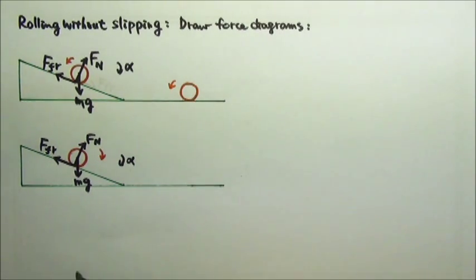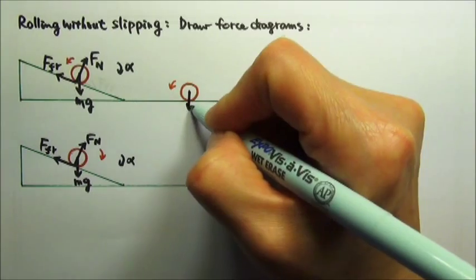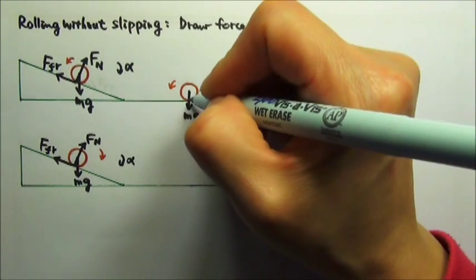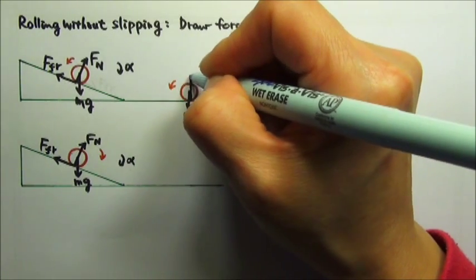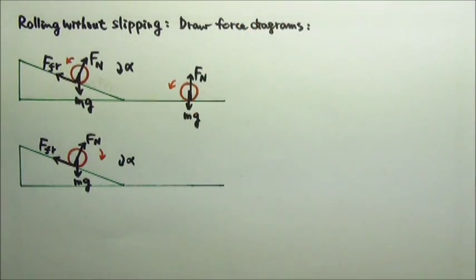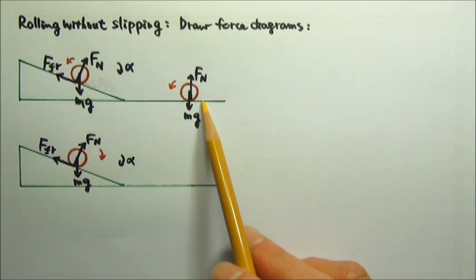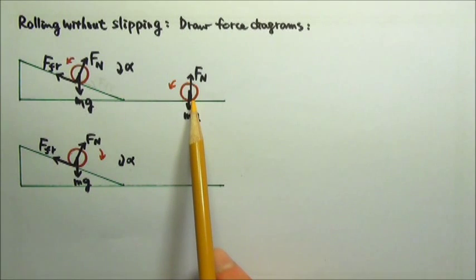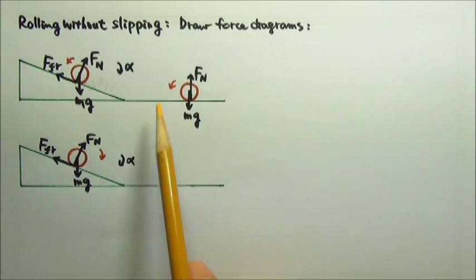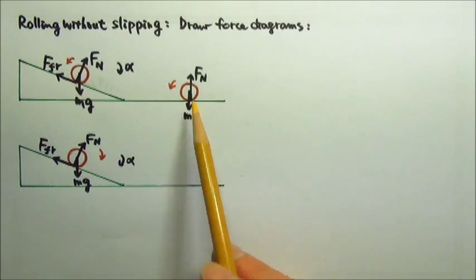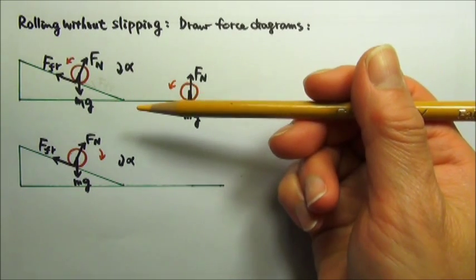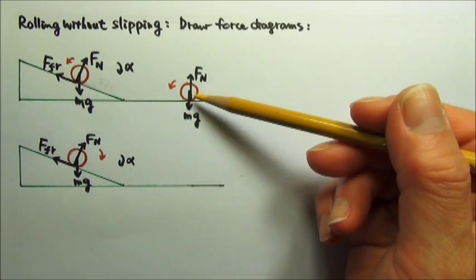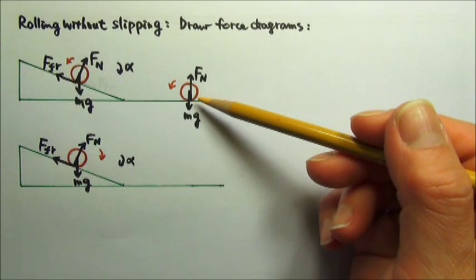Now let's look at the sphere on the horizontal surface. mg goes straight down from the center of mass, and normal force acts at the contact point going straight up. What about friction? The sphere on the horizontal surface has no tendency to slide — there is no force pulling it to the right or to the left. The sphere with the initial velocity would continue to travel at constant velocity on the horizontal surface. It does not have angular acceleration, so there is no friction.